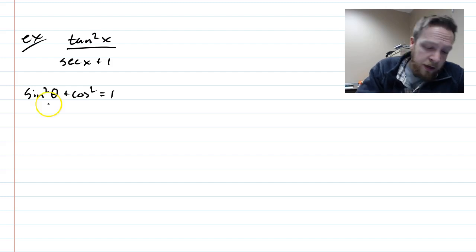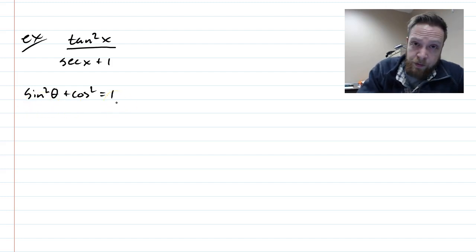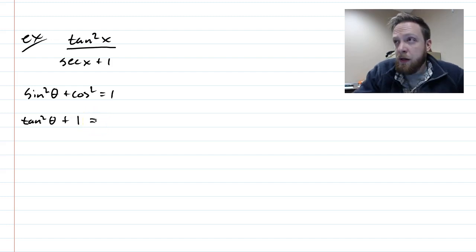And so I'm going to go back to sine squared plus cosine squared equals 1. And if I want a tangent squared, I've got to divide everything by cosine squared. So if I divide that by cosine squared, I'll have tan squared theta. This will be plus 1. And then 1 divided by cosine squared is secant squared.